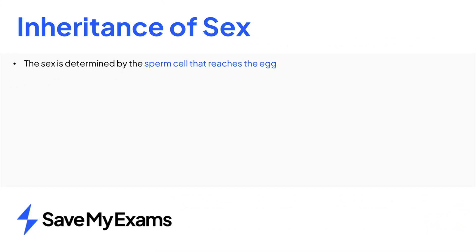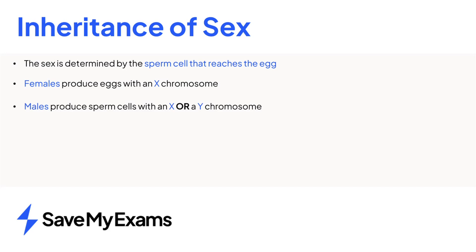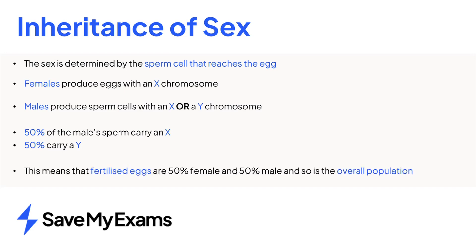In summary, the sex is determined by the sperm cell that reaches the egg. Females produce eggs with an X chromosome, whereas males produce sperm cells with either an X or a Y chromosome. 50% of males' sperm will carry an X, the other 50% will carry a Y chromosome. This means that fertilised eggs are 50% female and 50% male, and this represents the overall population.